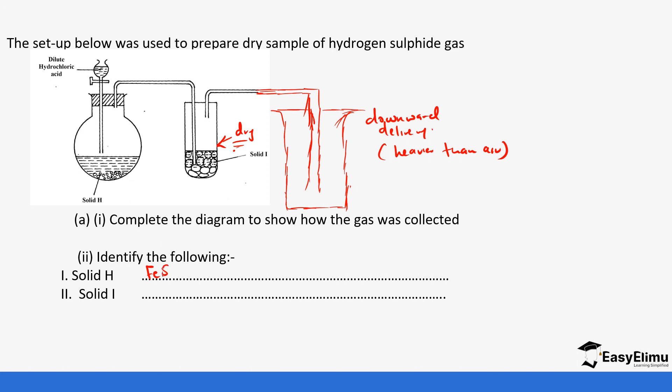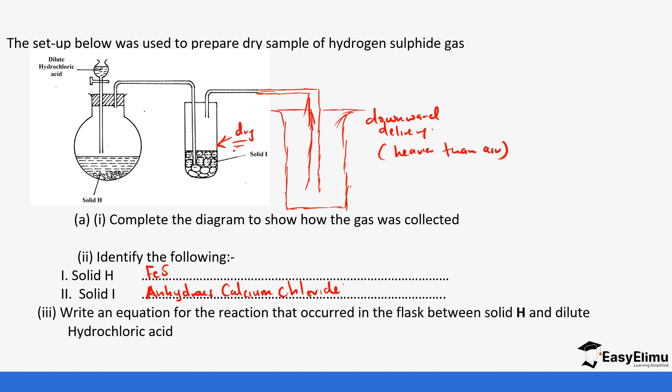Solid I is going to be anhydrous calcium chloride—this is the drying agent. Write an equation for the reaction that occurred in the flask between solid H and dilute hydrochloric acid.